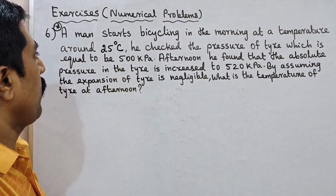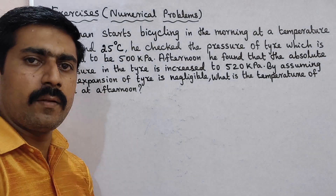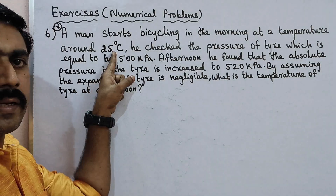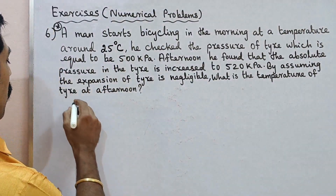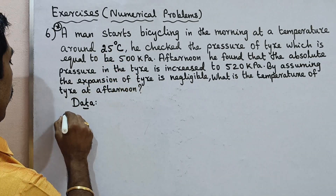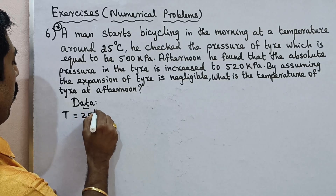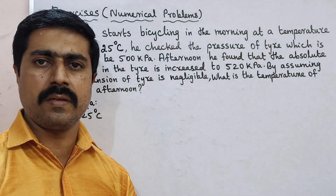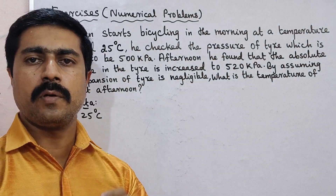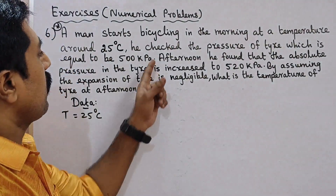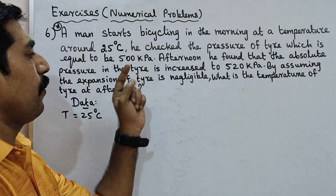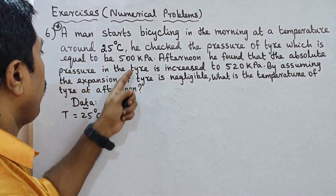It is very simple. One person is bicycling. In the morning, the temperature is around 25 degrees Celsius. Step by step, the data will fill up. The morning temperature T1 is equal to 25 degrees Celsius, and the tyre pressure P1 is equal to 500 kPa.